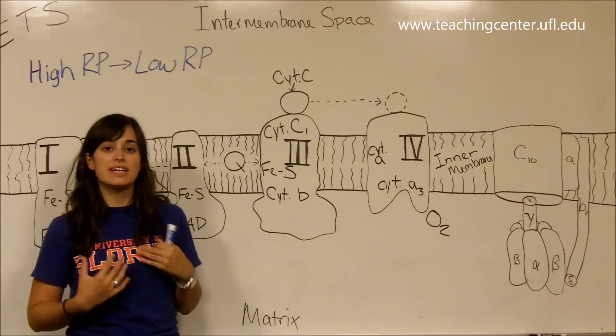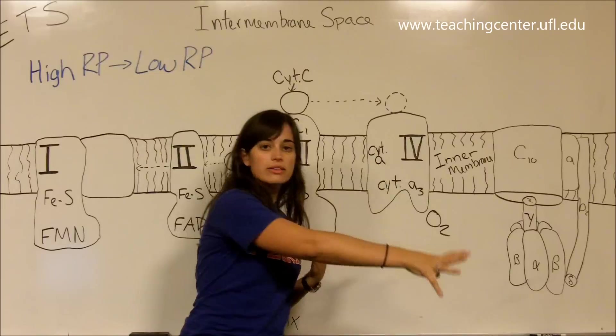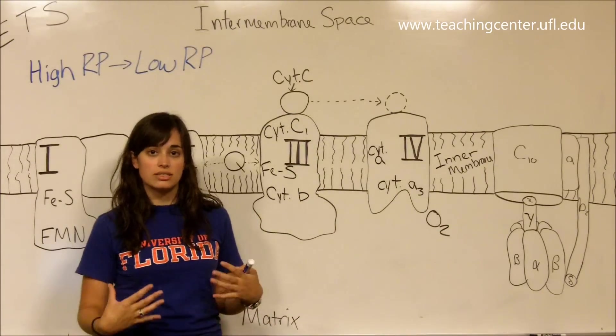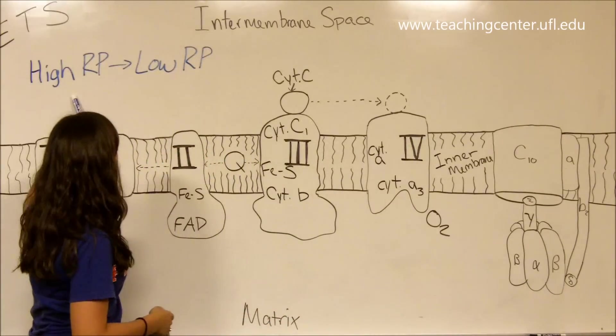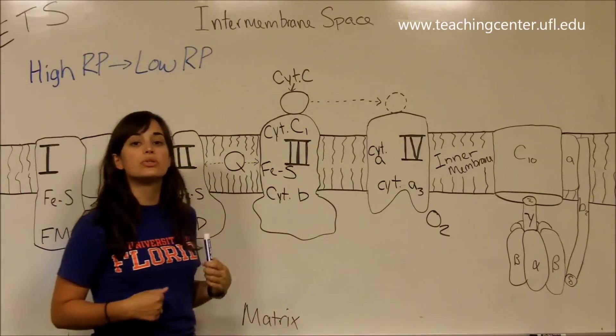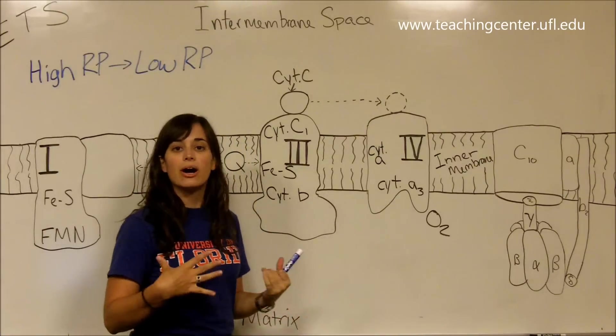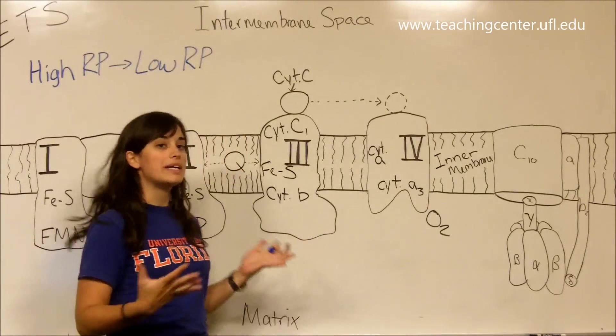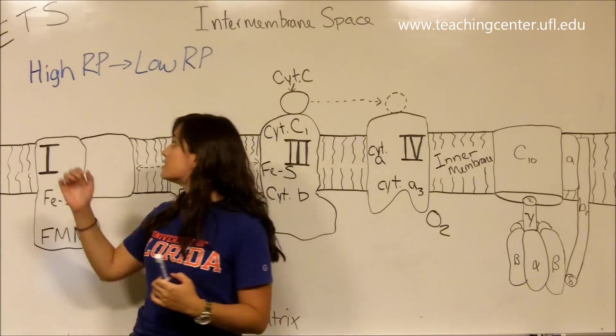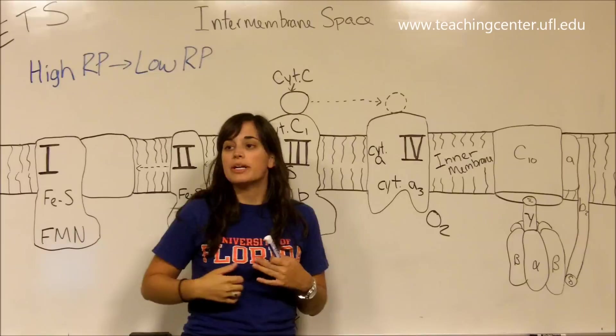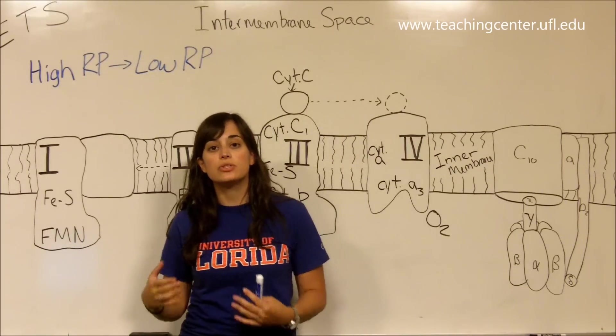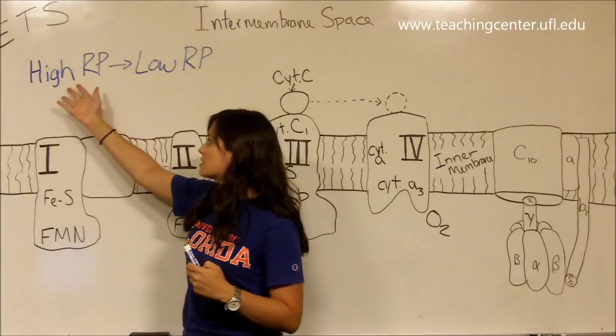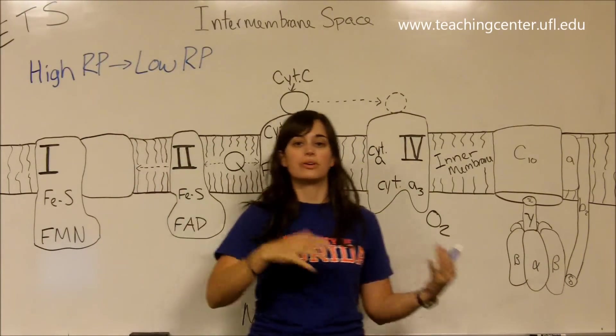When something is reduced, that means it's gained electrons. If something is reducing something else, that means it's giving away electrons so that the thing being reduced is gaining those electrons. So if something is acting as a reducing agent, that means it's giving away electrons to something else so that other thing can be reduced. Of course the reducing agent is oxidized. So if you have a high reducing potential, that means you have a great ability to give off electrons and to be oxidized yourself.